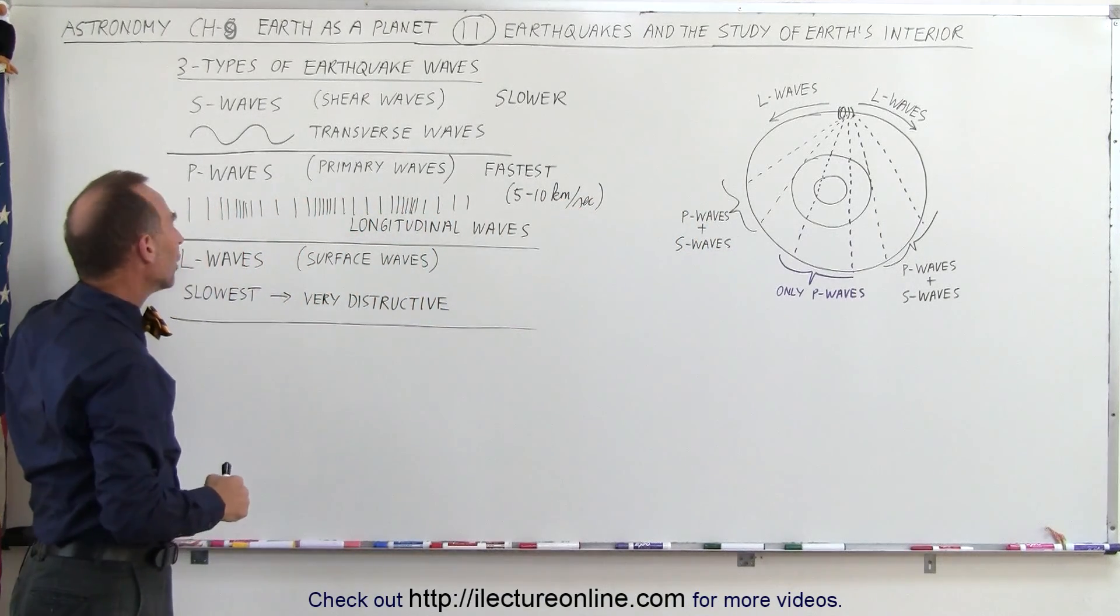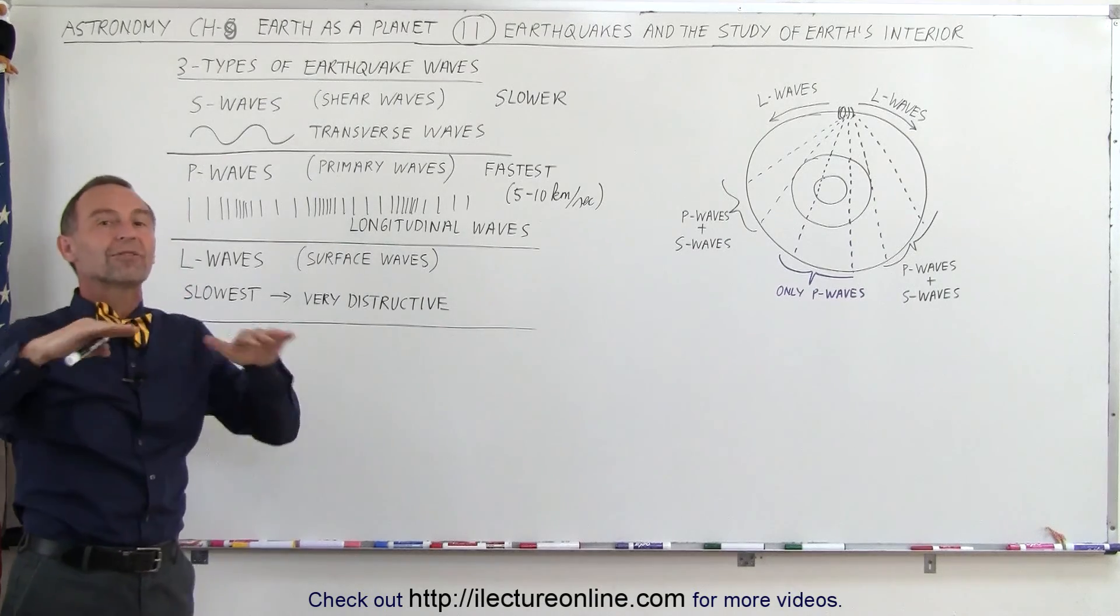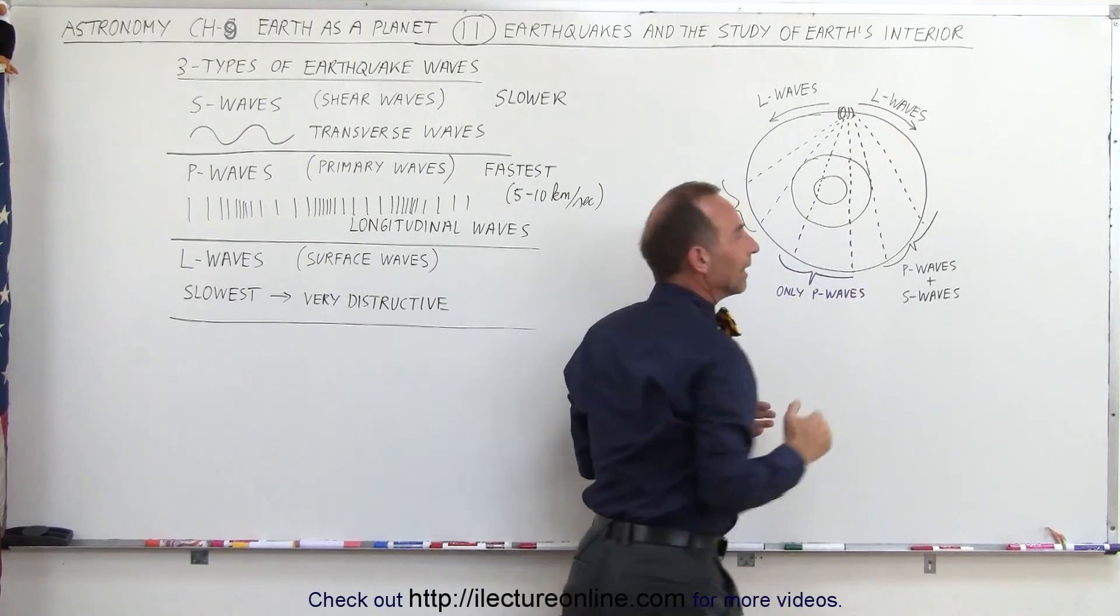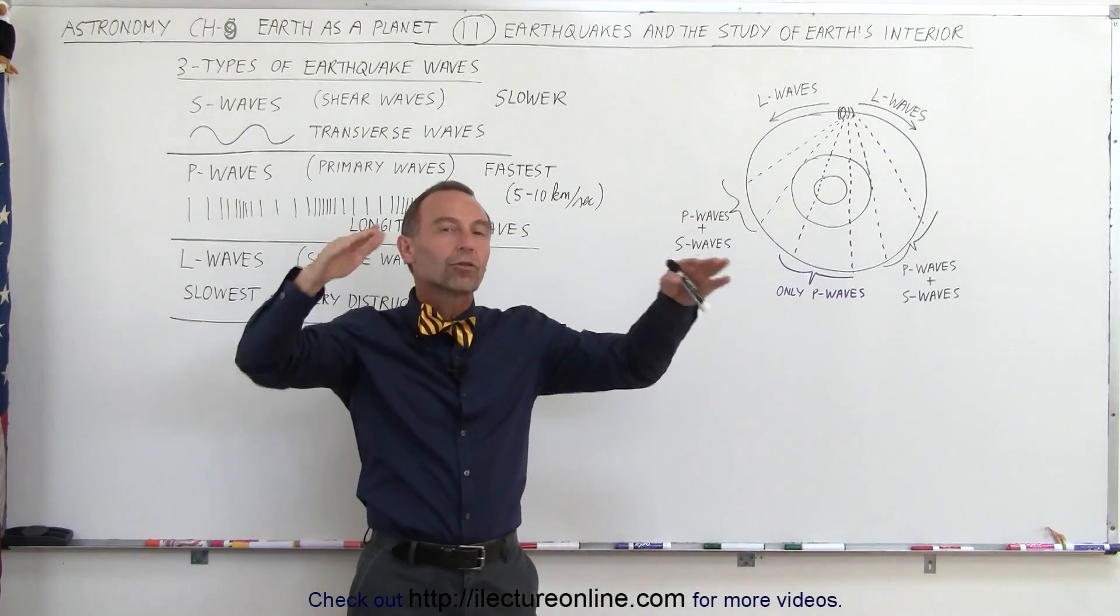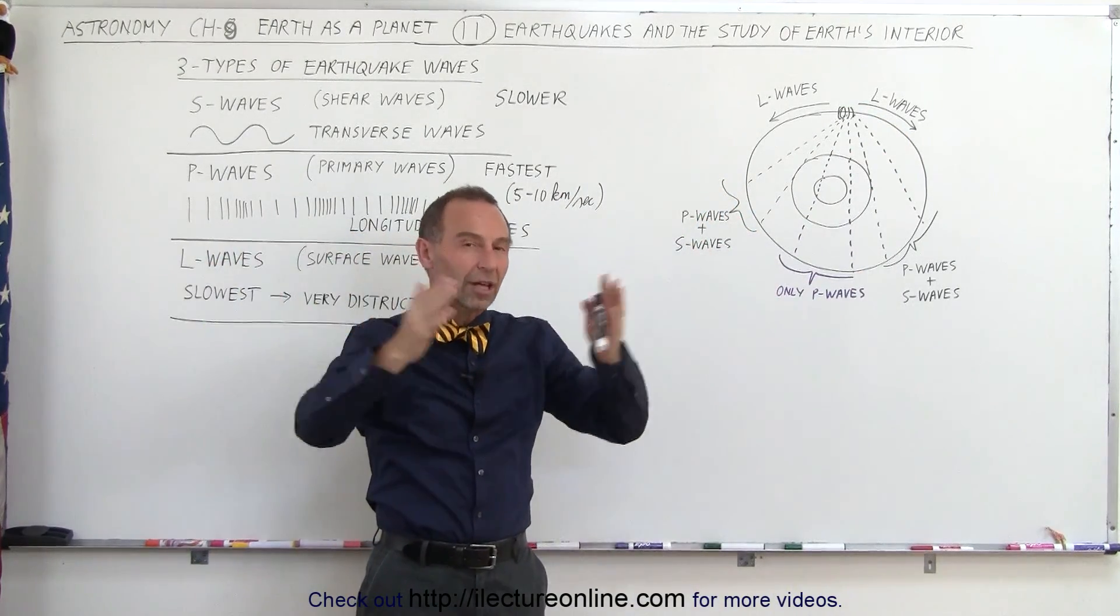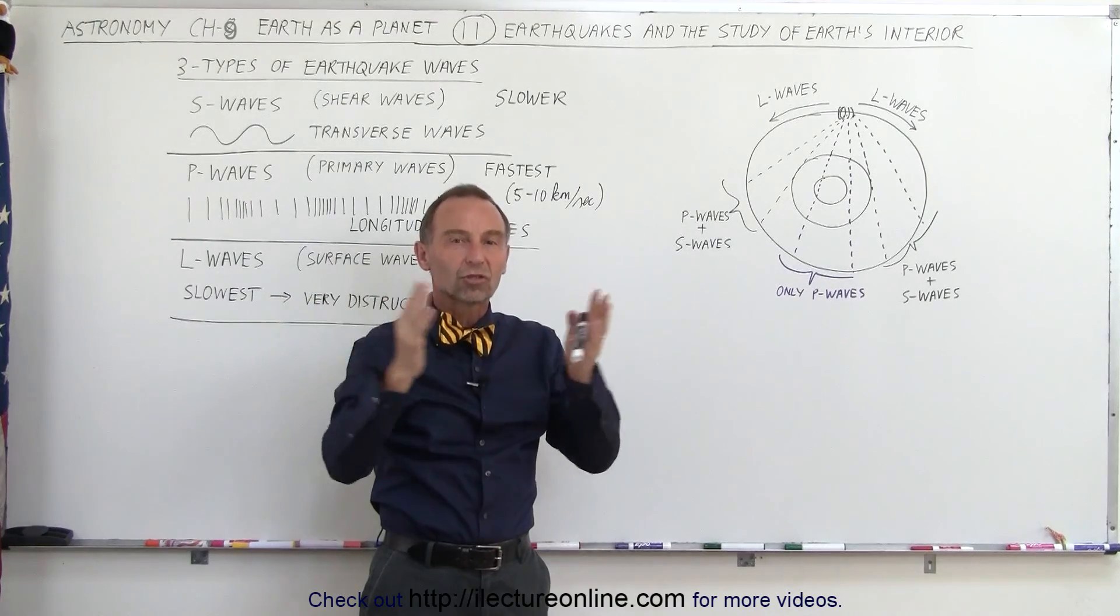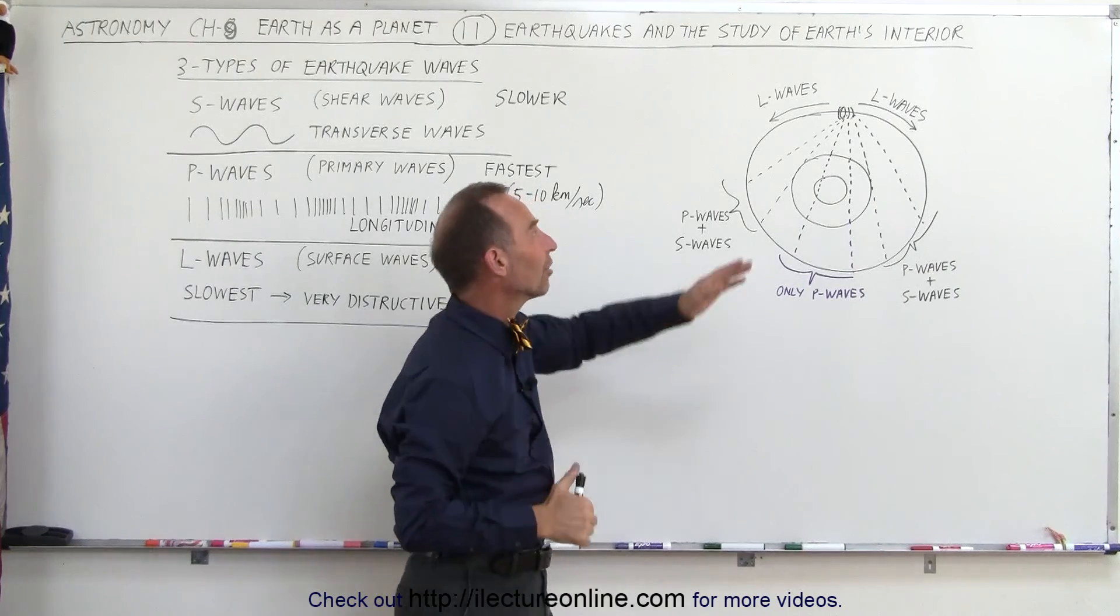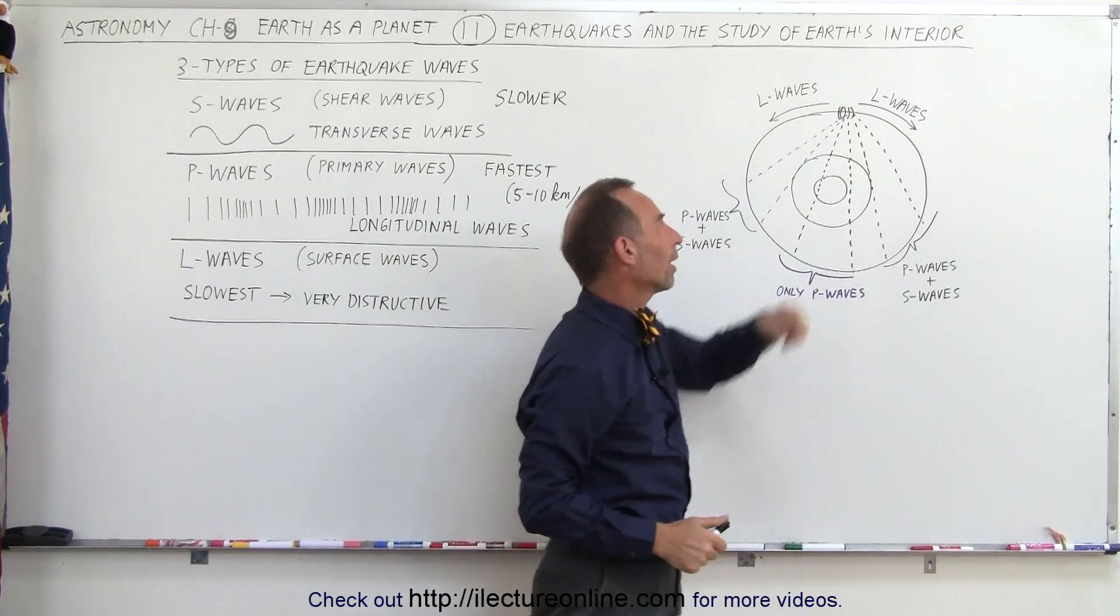The third kind of wave, the L waves, are called surface waves. They travel around the surface of the Earth from the site along the surface, and they're the waves that cause ripples on the surface of the Earth, which cause a lot of damage as buildings and objects sway back and forth. If their structure is not very sound, they will collapse under the tremendous energy release from these surface waves.